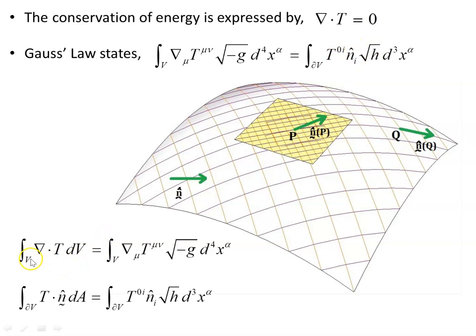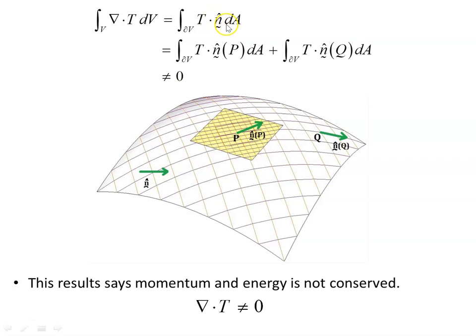∇·T, the divergence integrated over a volume, can be expressed as a four-volume integral. This part is the determinant of the metric. The flux over some surface is T·n-hat, where n is an outward-pointing normal to the surface, and in component form Gauss's law is written accordingly.